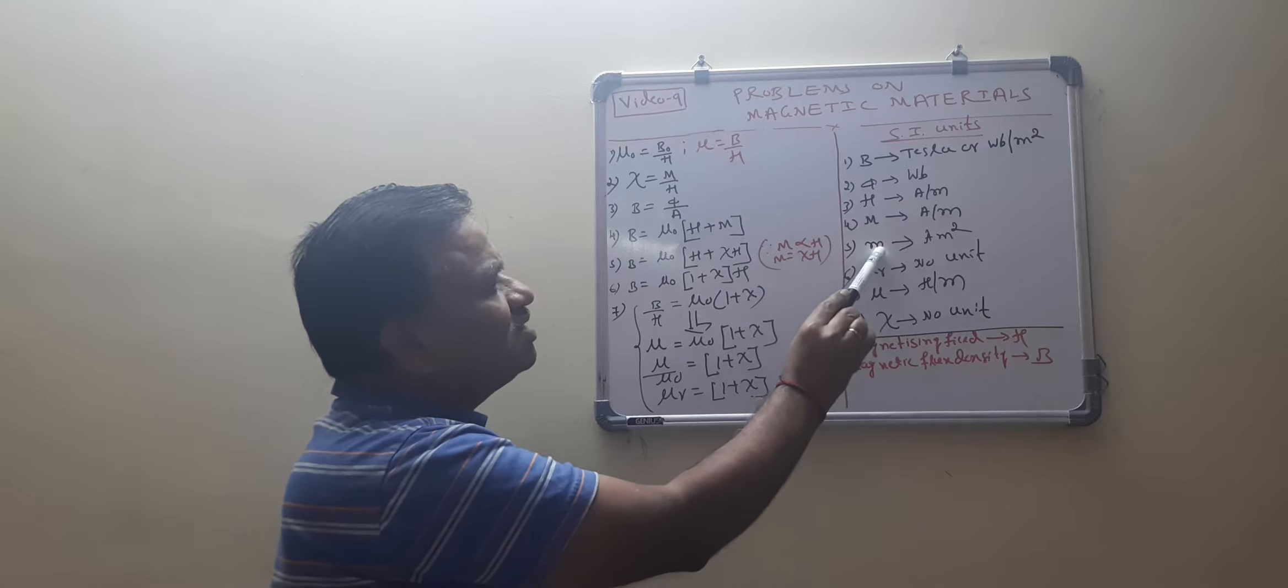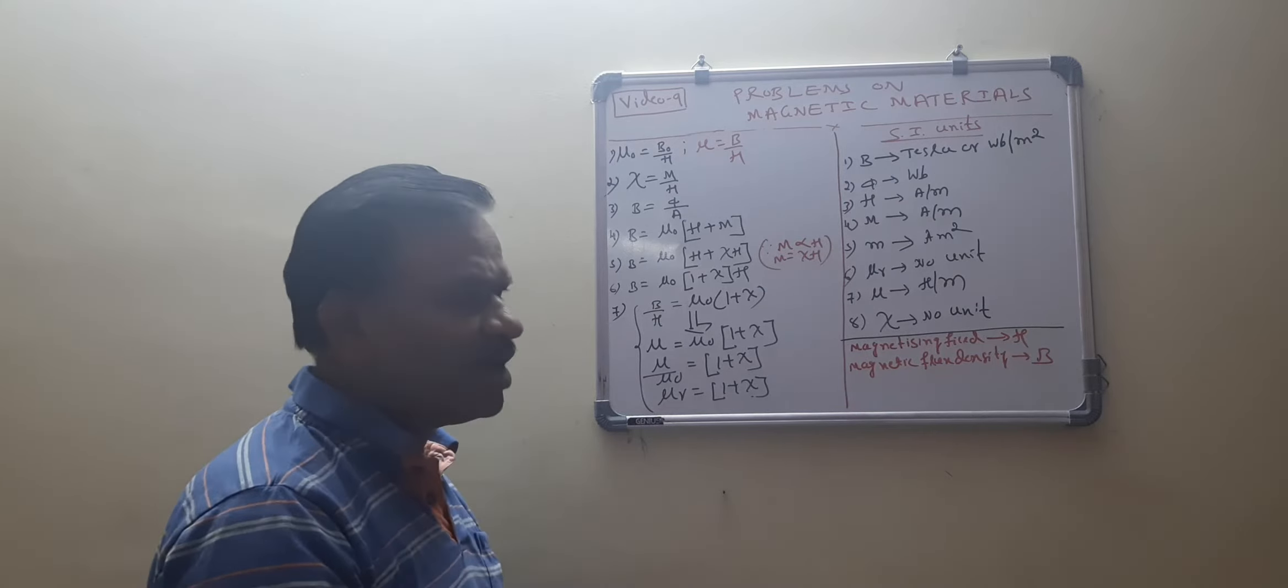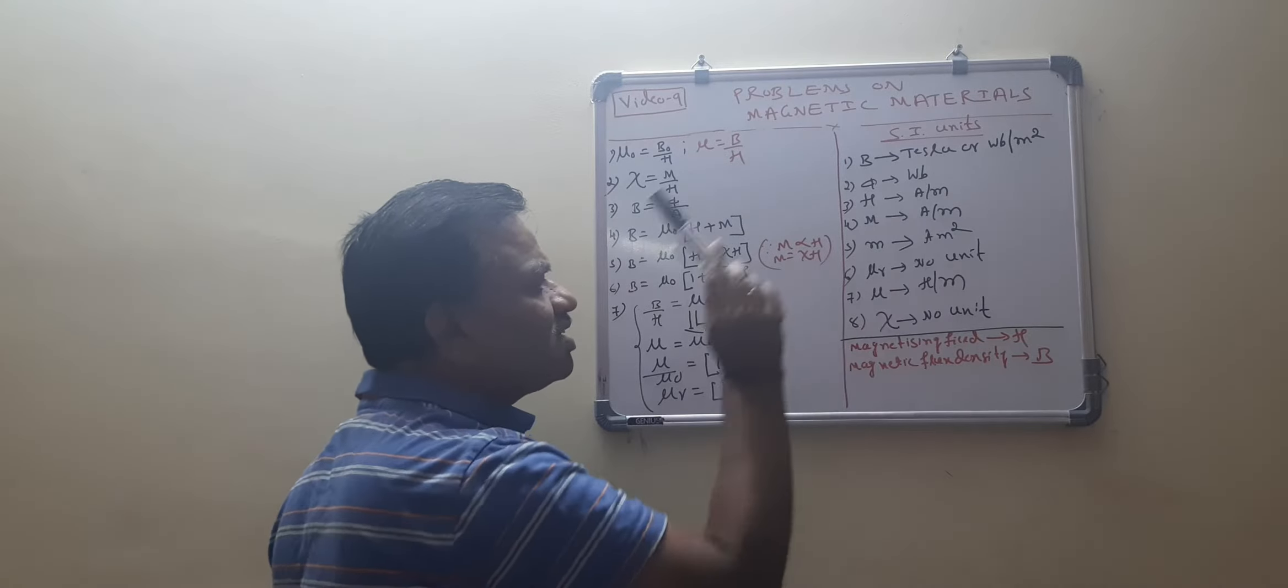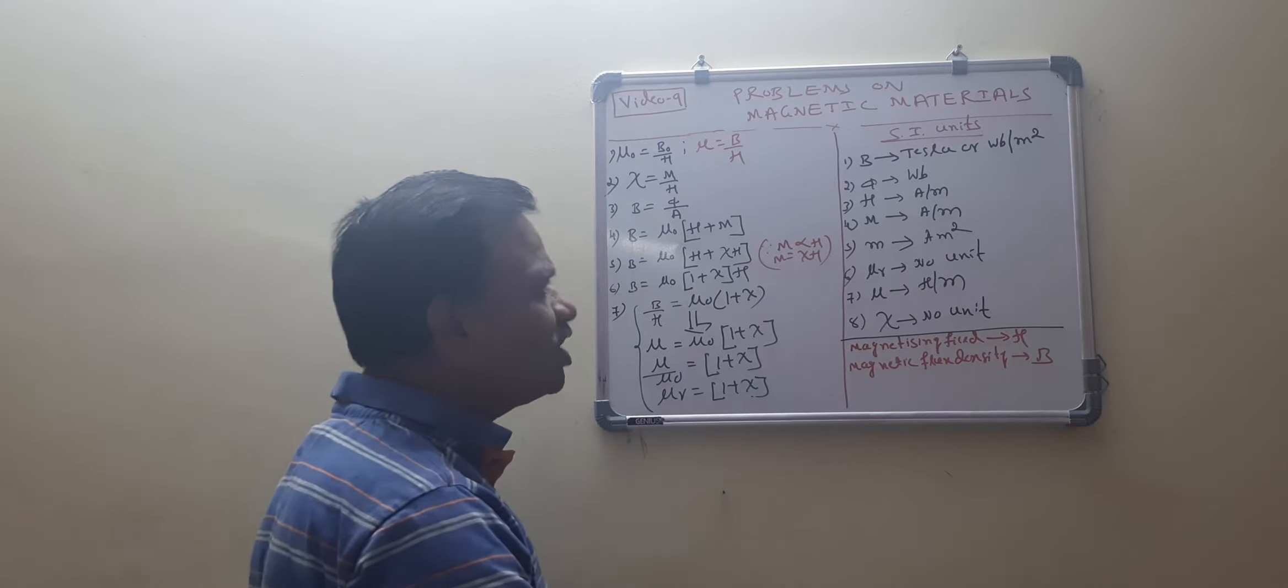Next, it is small m. It is called as magnetic moment. Magnetic moment. The unit is ampere meter square. Ampere meter square. Magnetic moment.